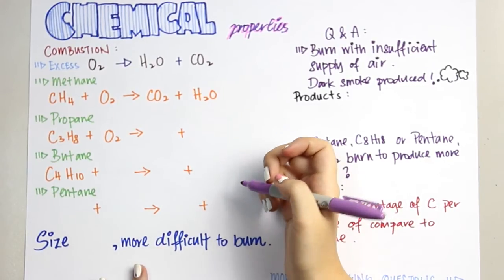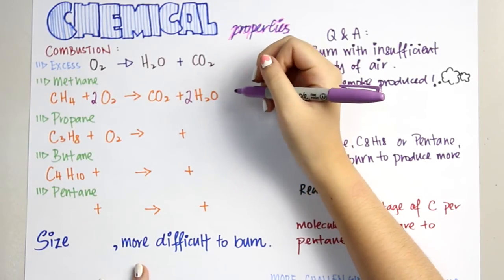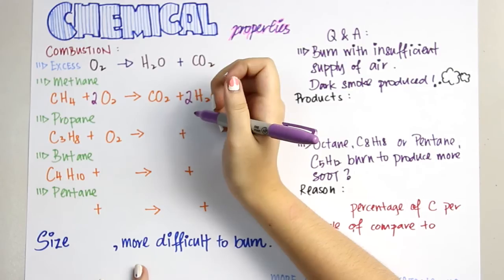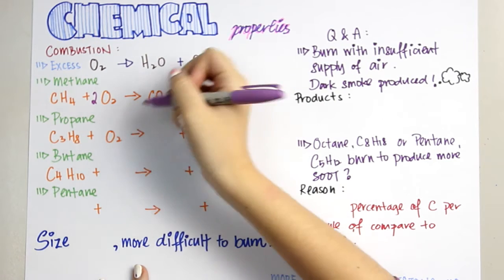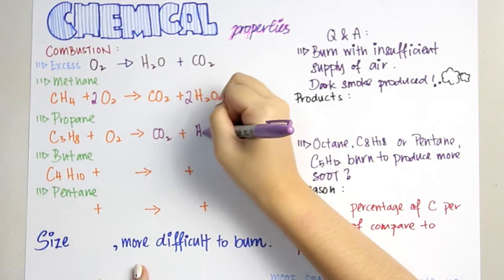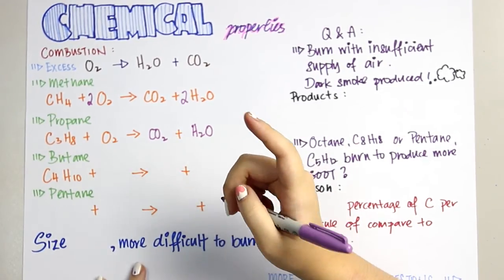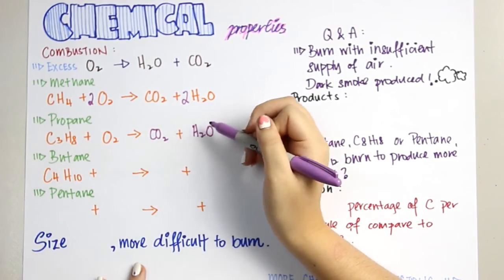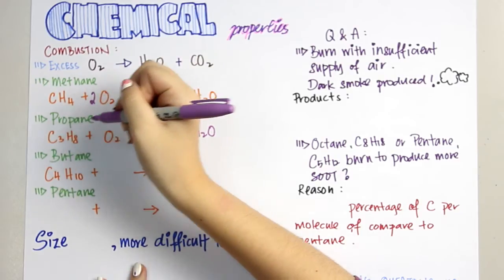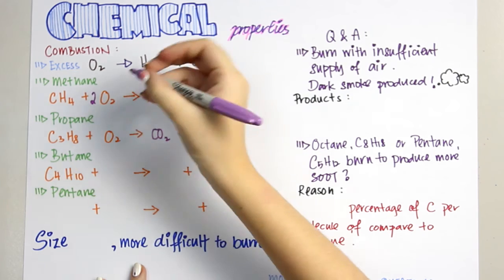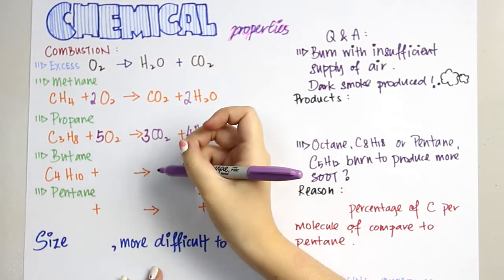Balance the equation by adding coefficients in front of oxygen and in front of water. The next example is propane. Propane's formula is C3H8. With excess oxygen it produces carbon dioxide and water. To balance the equation, a tip is to always count hydrogen atoms first. Since the left-hand side has eight hydrogen atoms, add a 4 in front of water, and add a 5 in front of oxygen.